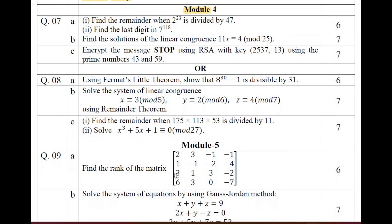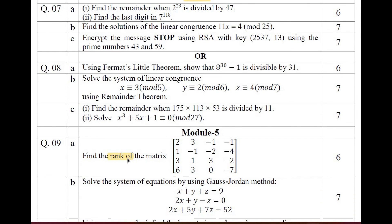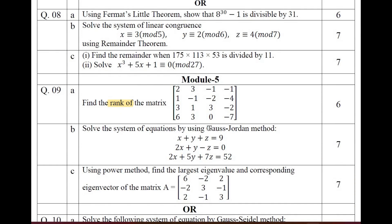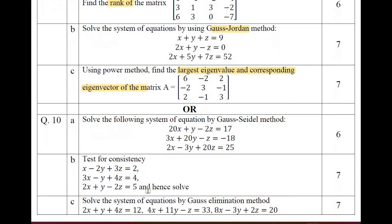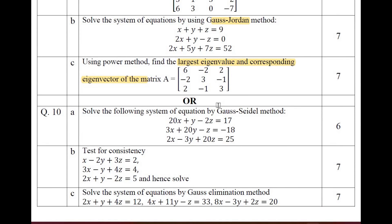Moving on to Module 5 of question paper 2. One problem is on rank, Gauss-Jordan method will be there, and the largest eigenvalue with eigenvector will be there. The next set of problems covers Gauss-Seidel method, consistency of the system, and Gauss elimination. This is the pattern of the question paper — you can easily choose the problems to solve in your final examination and start preparing right now.